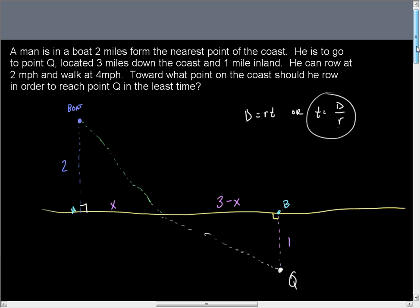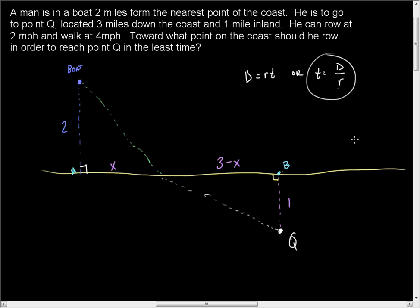Time is going to be the thing that we're going to be optimizing, which means everything that we do has to be in reference to time. So I just solved the distance equals rate times time for time. So time is equal to the distance over the rate. Now we have to figure out how far he travels.